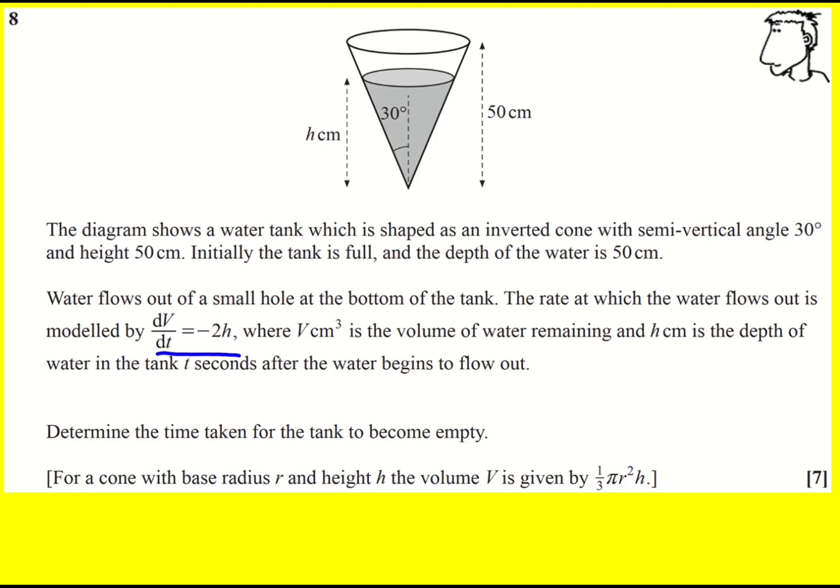We have a differential equation to solve, but we've got V and T on the left and then H on the right. Now H is not a constant, it's changing as the water goes down. So it will depend on the volume, or the volume will depend on the height. And therefore we need to slightly modify this. Now ultimately we're asked for the time taken for the tank to become empty. We're not asked to find V or H.